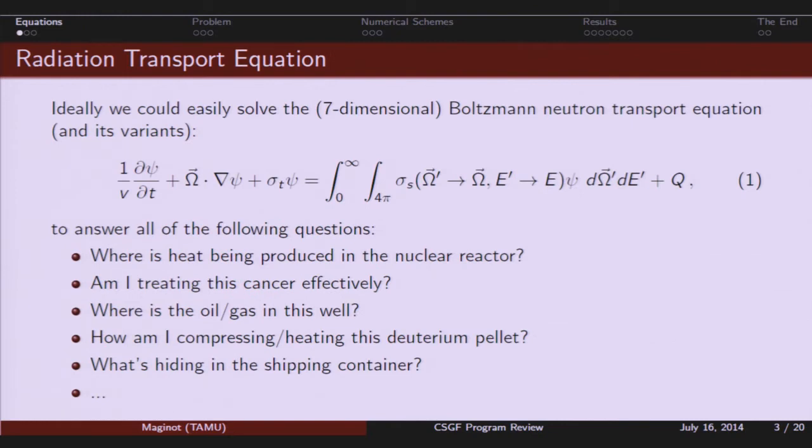All right. So this beautiful equation here is the seven-dimensional, so space, time, angle, and energy, Boltzmann transport equation. We're trying to solve for the angular flux, psi, so you can kind of think of that as like a path length rate density in a particular direction.